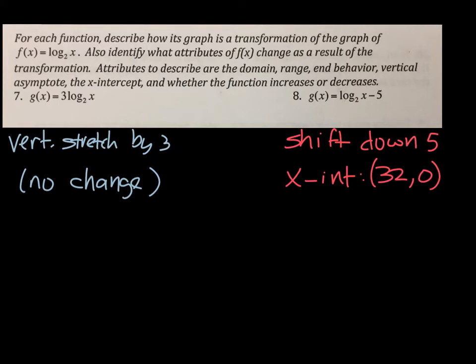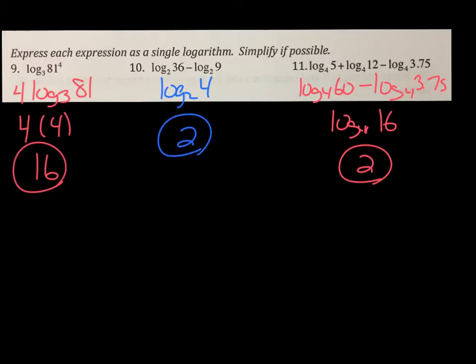This one says, tell what changed from here to here. And what happened is it vertically stretched by 3. But everything they gave me to describe, nothing changed. It just got steeper. That's all that happened. But number 8, because I had to shift down 5, the asymptote's the same place, which means the domain's the same, the range is the same, end behavior. All that stuff is the same, except it does change my x-intercept. And the way you find the x-intercept is you put 0 for the y, which means you would move the 5 over. And you've got to solve for x. That's basically asking you 2 to the 5th power is x. 2 to the 5th power is 32. That's the only thing that changes.